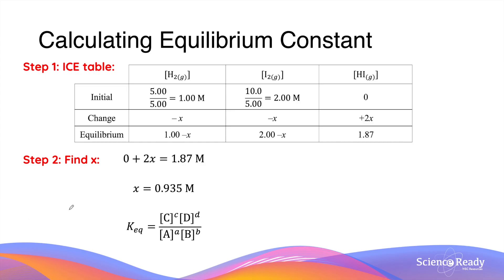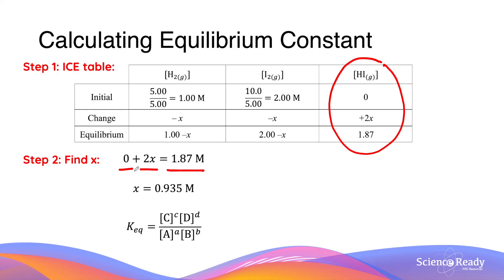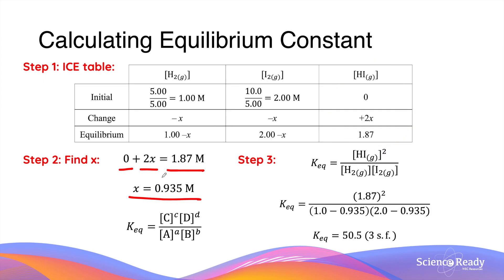Once the ICE table is complete, the next step is to find the value of x. We started with zero HI and gained 2x to reach 1.87 mol/L at equilibrium, so 2x = 1.87, giving x = 0.935 mol/L. Once we find x, we substitute back to find the equilibrium concentrations of all chemicals, then substitute those into the equilibrium constant expression to calculate the final value of Keq.